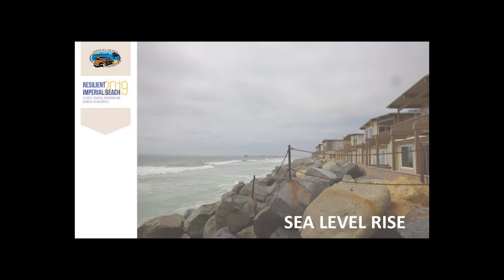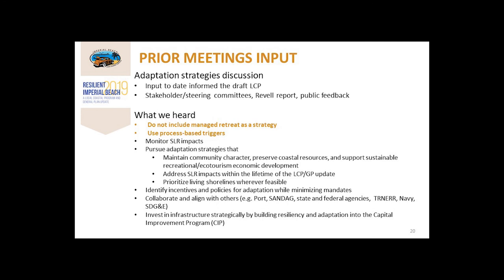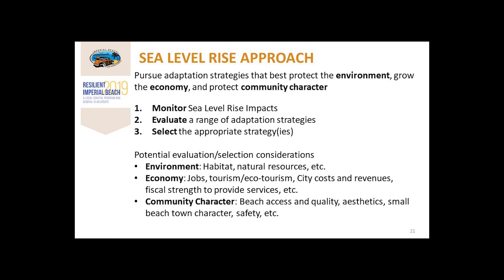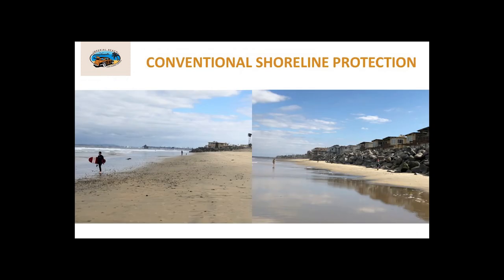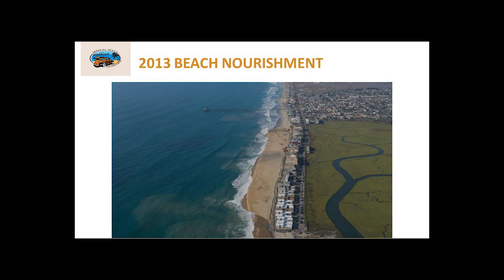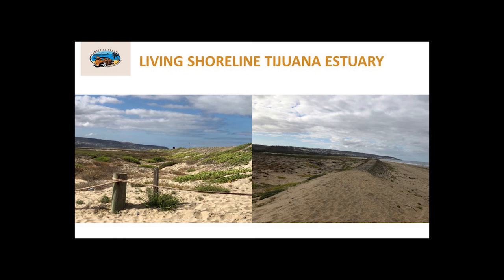Now we'll be talking about the sea-level rise component of our LCP update. We will be moving beyond the Imperial Beach sea-level rise study and actually looking at real adaptation strategies for the future. There are many things that the city has done that we'll be monitoring and assessing going forward. These include existing conventional shoreline protections, numerous beach nourishment projects, and we have very good partnerships with the Tijuana Estuary, which is a fine example of living shorelines that could be implemented in the north of our city.